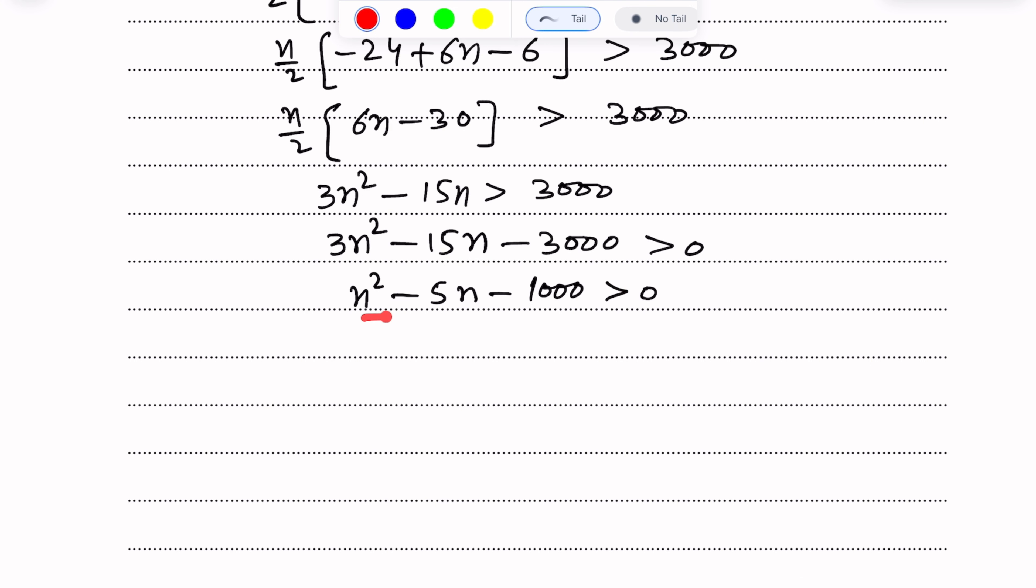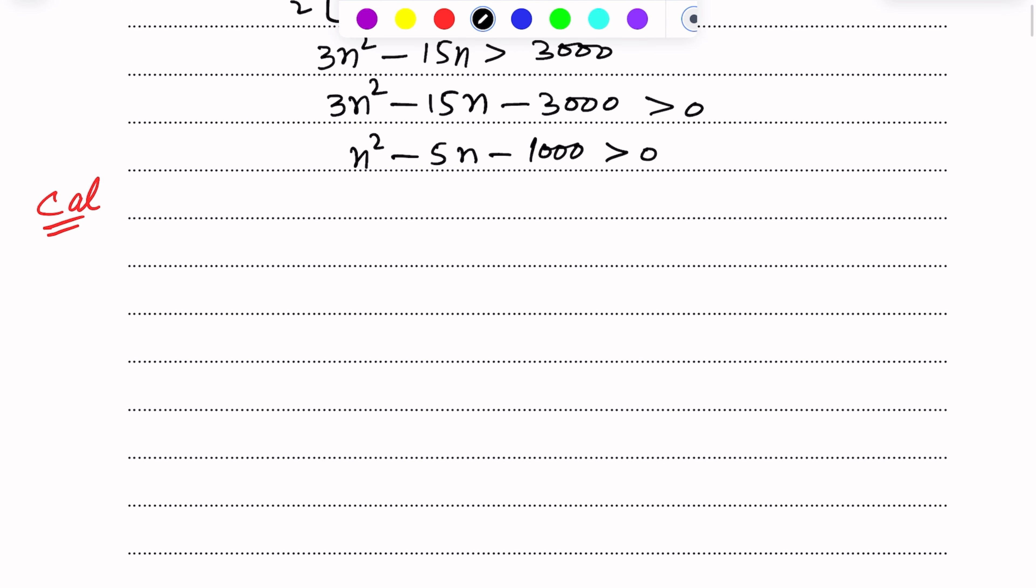We get n square minus 5n minus 1000 is greater than 0. Now we can use quadratic formula or the calculator. We get two values of n: n is equal to 34.22 or n is equal to minus 29.22, so this minus value n is not applicable.